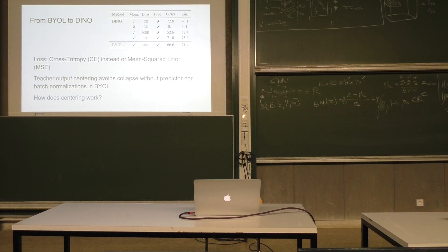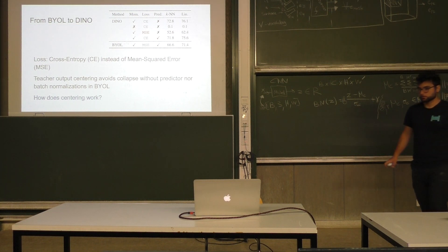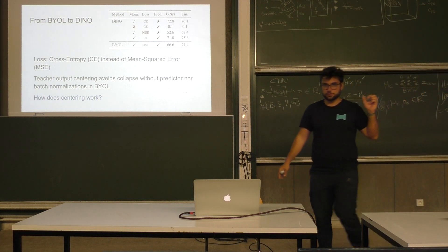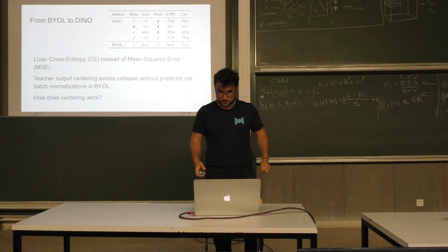I assume that these vectors are already normalized. So instead of optimizing this or optimizing this, it's exactly the same thing. I think this 2 is correct. This is the idea — I don't know if there are some small math mistakes.